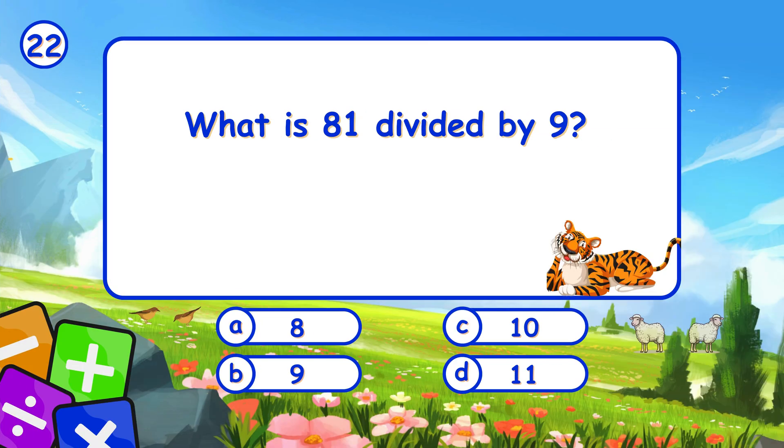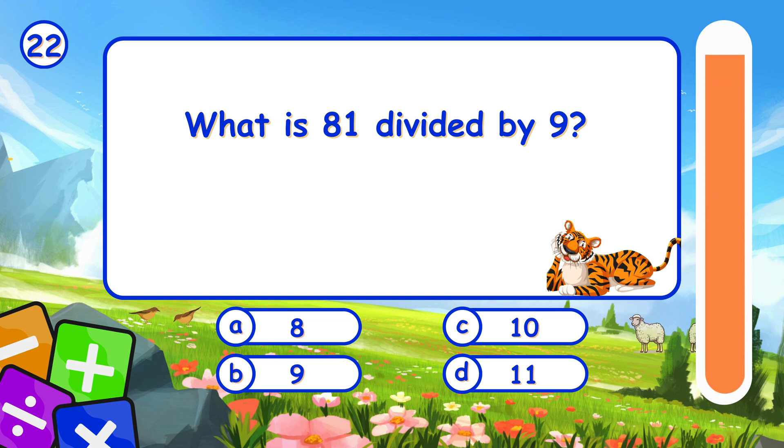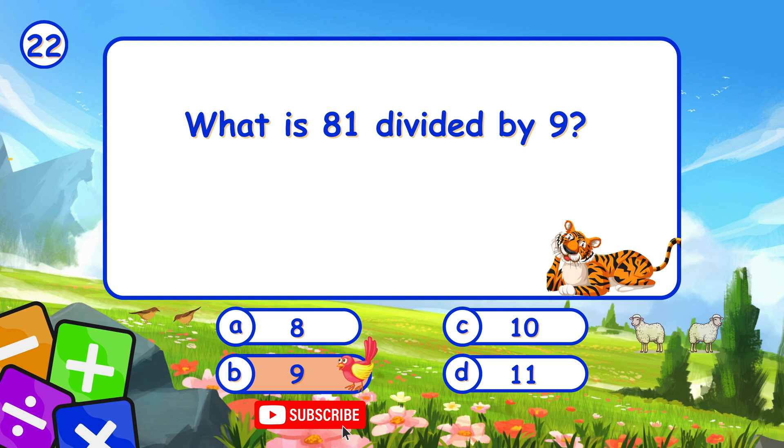What is 81 divided by 9? It's B, 9. 81 divided by 9 is 9.